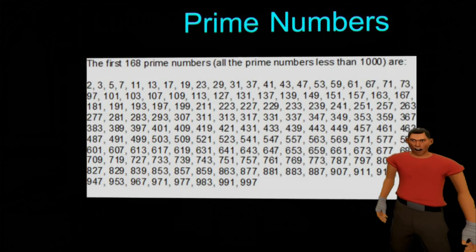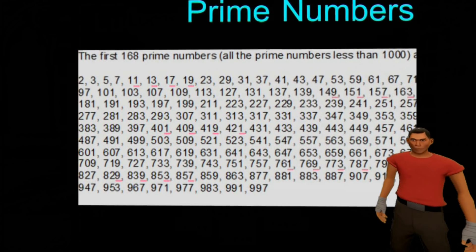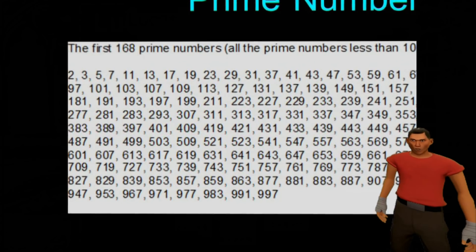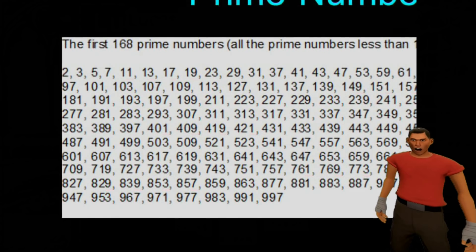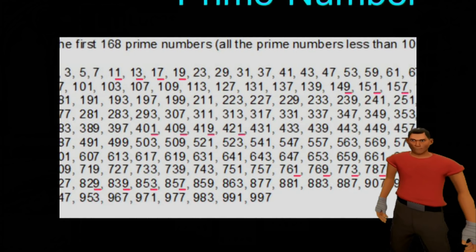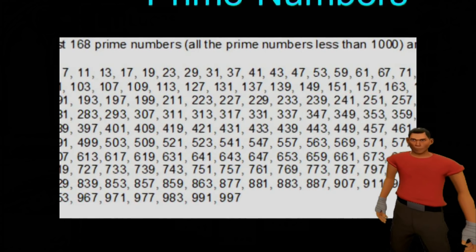Here is a list of all the prime numbers under 1000. As you can see, they all end in either a 1, a 3, a 7 or a 9.